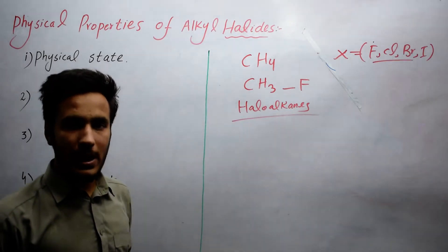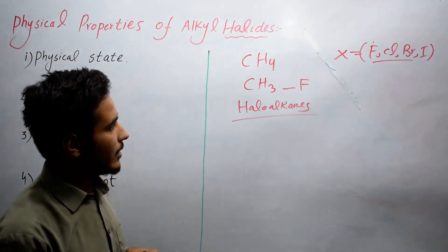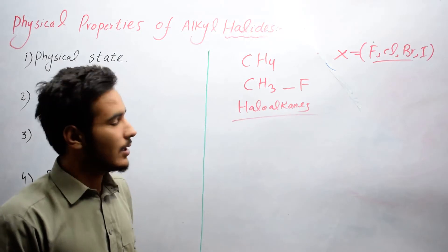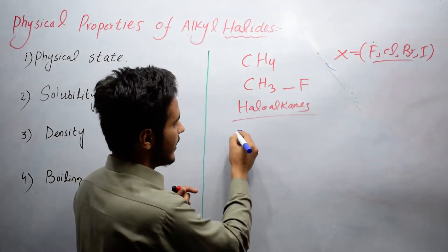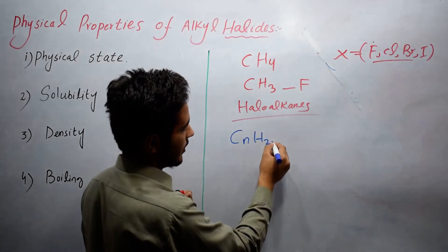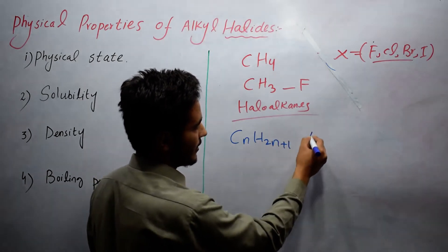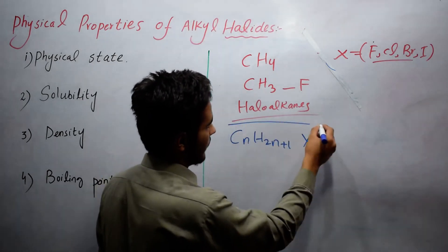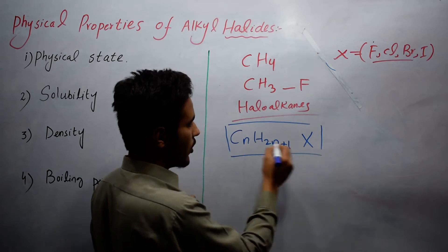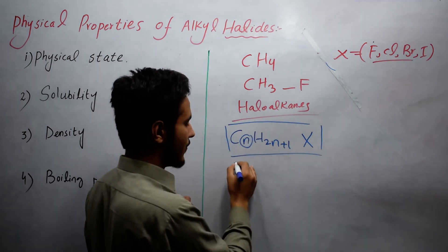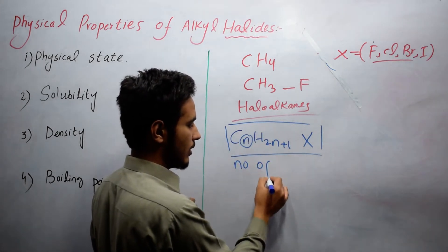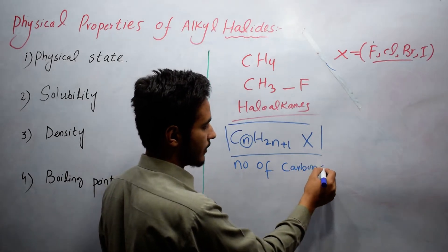The general formula for representation of alkyl halides is CnH2n+1X, where n is the number of carbon atoms.